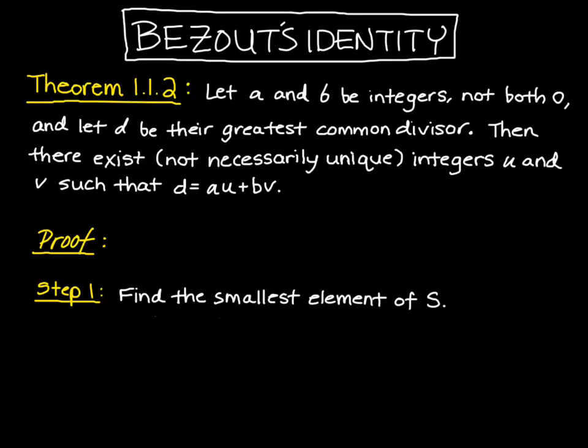Here, we want to prove Theorem 1.1.2, and it's stated by the following. Given integers a and b that are not both zero, and d the greatest common divisor of a and b, there exist integers u and v so that we can write the greatest common divisor of a and b as a linear combination of a and b. This theorem is called Bézout's Identity. And so let's prove it.